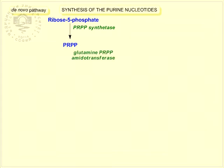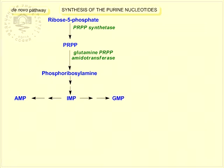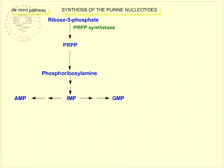The second enzyme is glutamine phosphoribosyl pyrophosphate amidotransferase. It catalyzes the replacement of pyrophosphate by the amide nitrogen of glutamine; the product of this reaction is phosphoribosyl amine. In the next stages of synthesis, inosine monophosphate is gradually formed, and from it the other two purine nucleotides, adenosine monophosphate and guanosine monophosphate, are produced. The committed step in the de novo pathway is catalyzed by glutamine phosphoribosyl pyrophosphate amidotransferase.